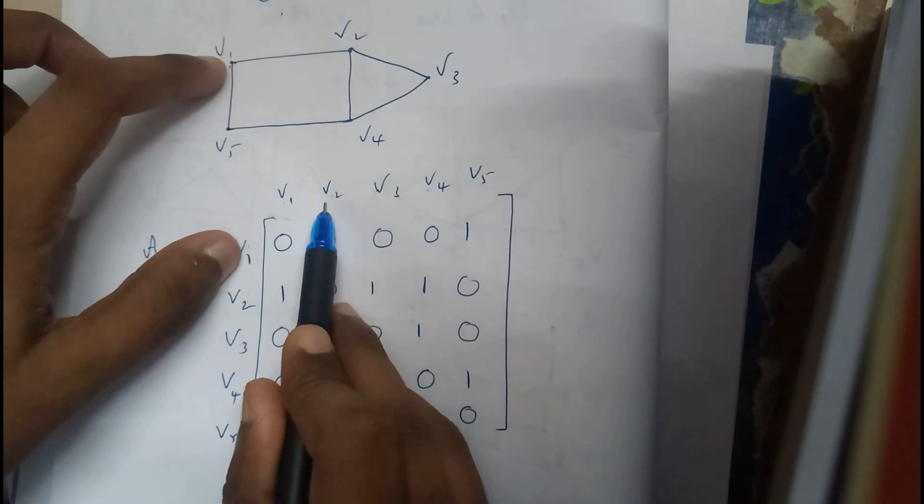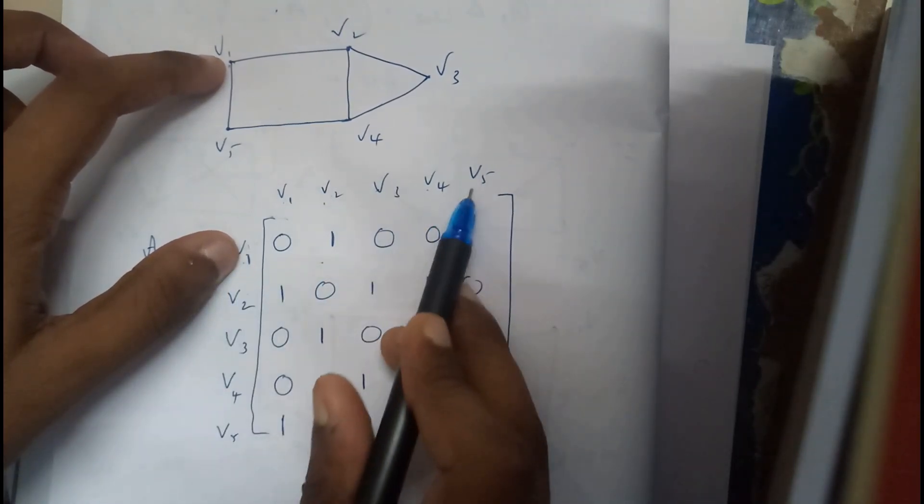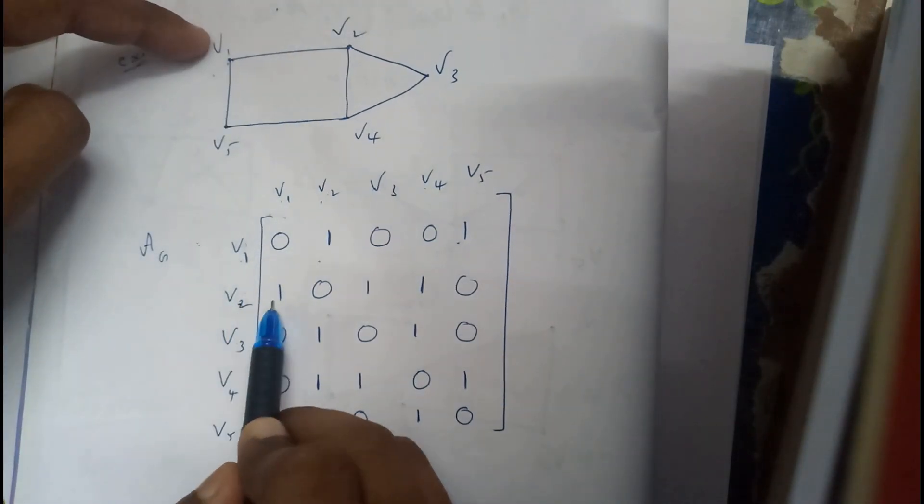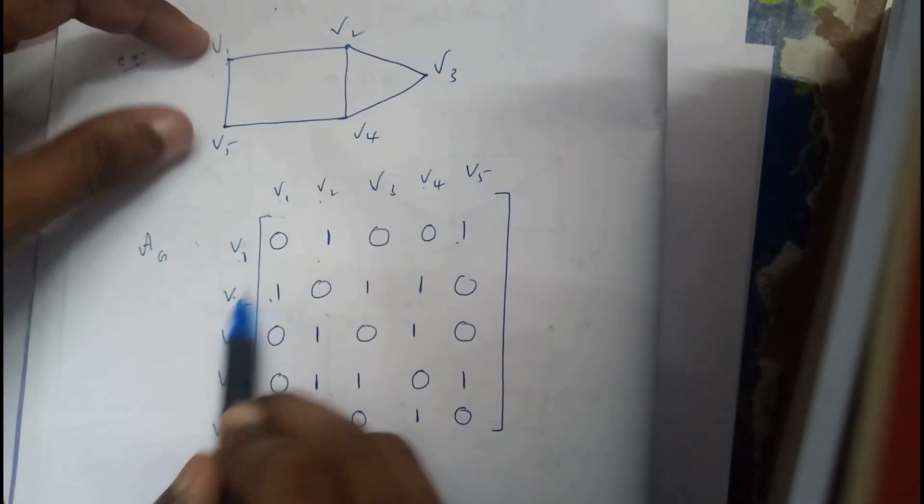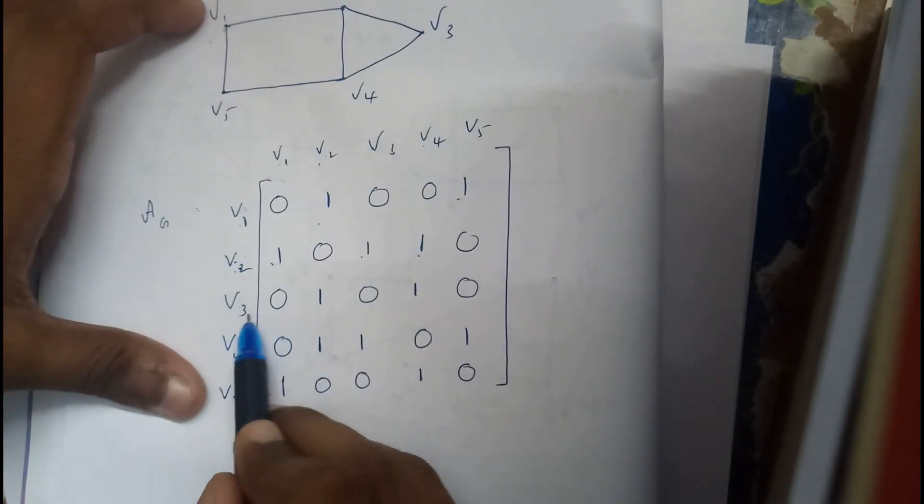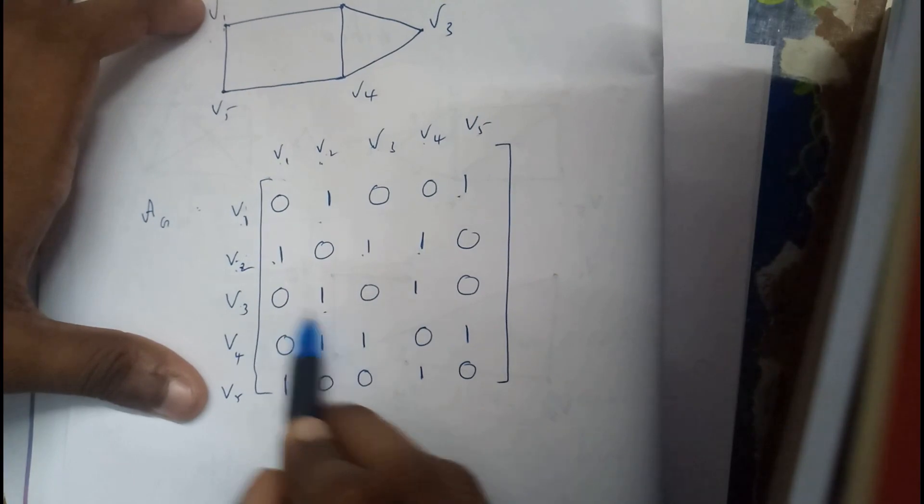So v1 to v2, write 1, v1 to v5, write 1. Next, v2 to v1, v2 to v3 1, v2 to v4 1, v3 to v4 1.